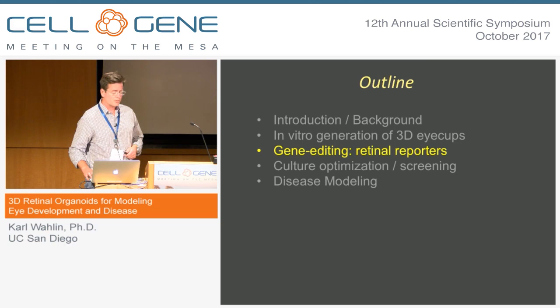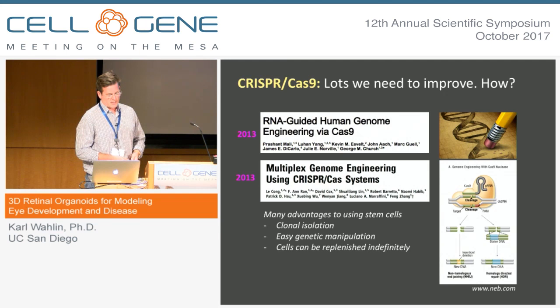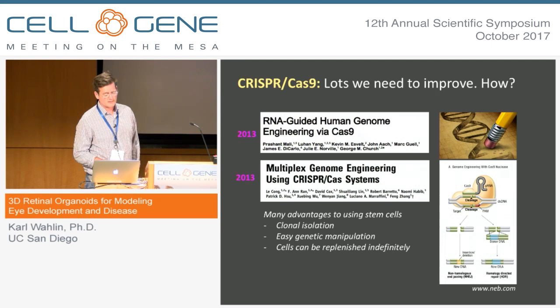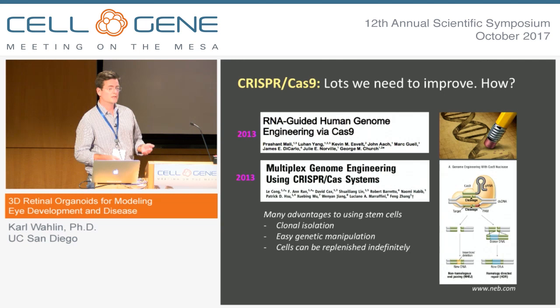The way we're approaching this problem is through gene editing. Generating reporters is probably the number one thing we can do to monitor the general status of cells as we're growing them. The CRISPR-Cas9 system — which most people here have probably used — is incredibly easy to use with many advantages: it can be clonally isolated, allows easy genetic manipulation, and cells can be replenished indefinitely. Once you have the cells, you have a stock of reporters for all your experiments.